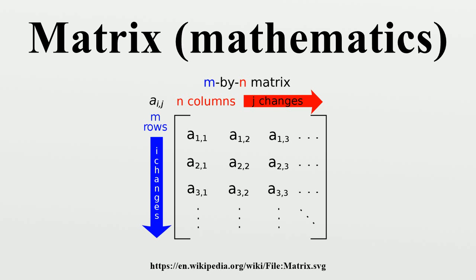According to some authors, a principal submatrix is a submatrix in which the set of row indices that remain is the same as the set of column indices that remain. Other authors define a principal submatrix to be one in which the first k rows and columns, for some number k, are the ones that remain. This type of submatrix has also been called a leading principal submatrix.